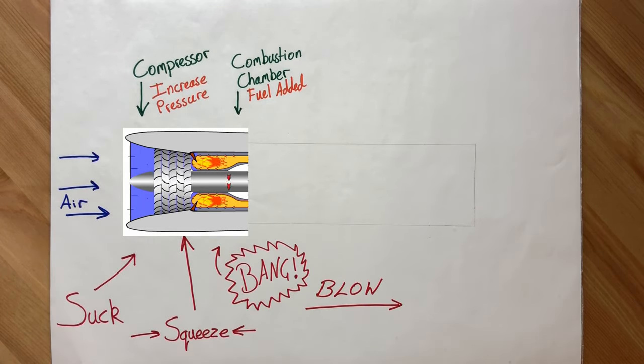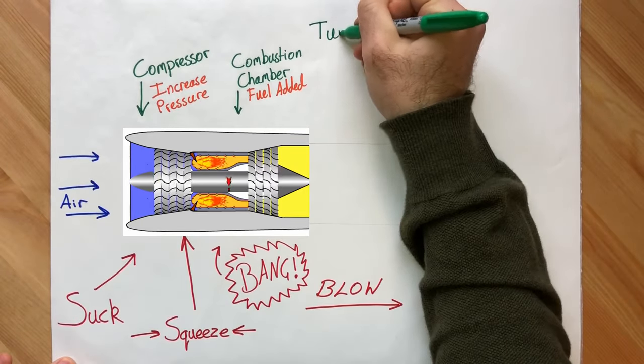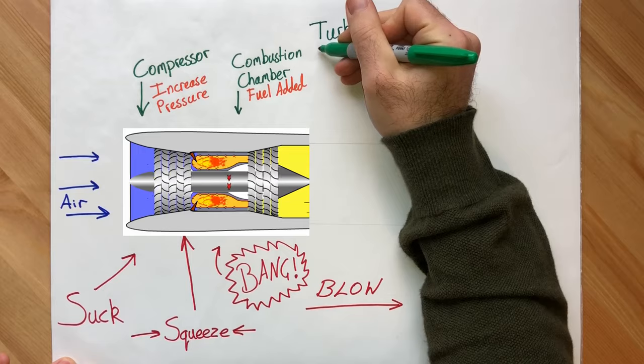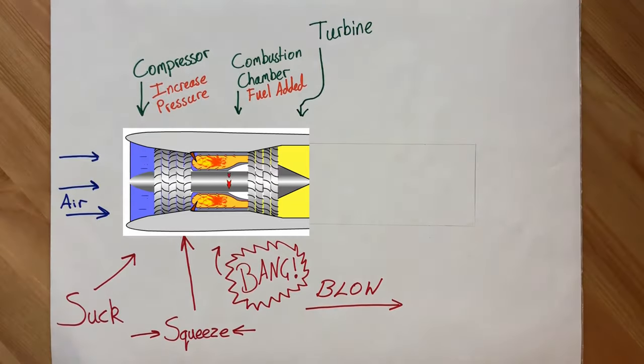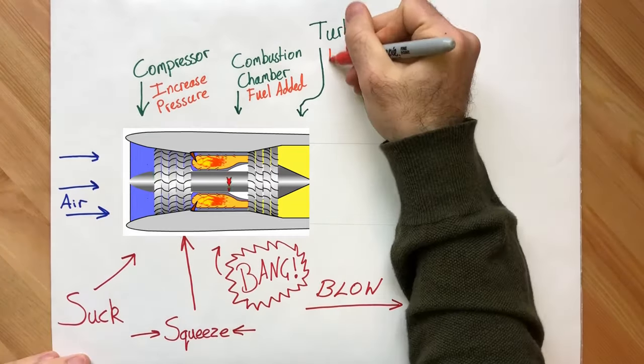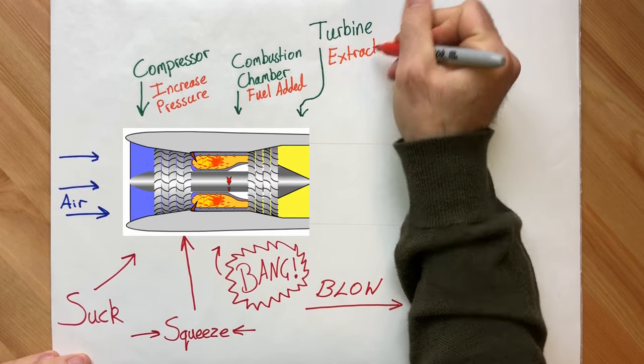Before the air can zoom out the back, it must first pass through the turbine. Simply put, a turbine is a fan, but designed to work in reverse. The rushing air causes the turbine to spin very quickly, and it extracts energy from the air in the process.